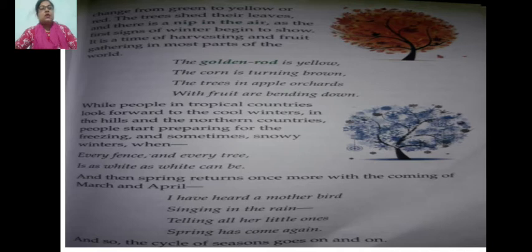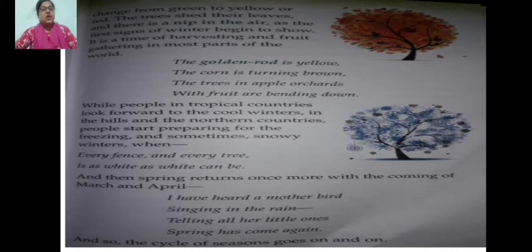The golden rod is yellow. Golden rod means a plant with bright golden yellow flowers. The golden rod is yellow because it is autumn season. The corn is turning brown, meaning it is about to ripen. The trees and apple orchards with fruit are bending down — the trees are full of fruits. People in warm tropical countries look forward to the cool winters; we long for cool winters.